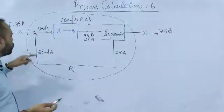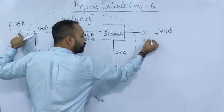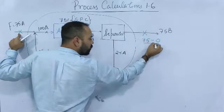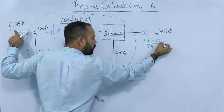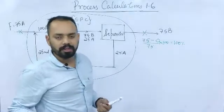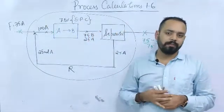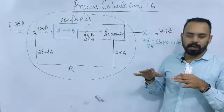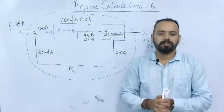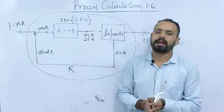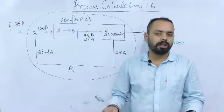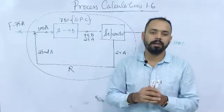The amount of A fed to the overall system is 75 moles. The amount of A leaving the overall system is 0, since all A is either converted or recycled. So the overall conversion is 0 divided by 75, multiplied by 100, which equals 100%. However, the single pass conversion was only 75%. So in a multiple unit system with recycle, single pass conversion and overall conversion will be different. For a single reactor without recycling, both values would be the same.